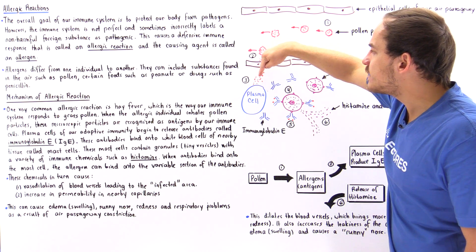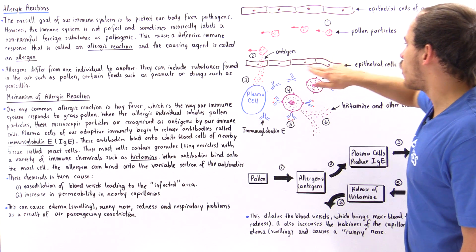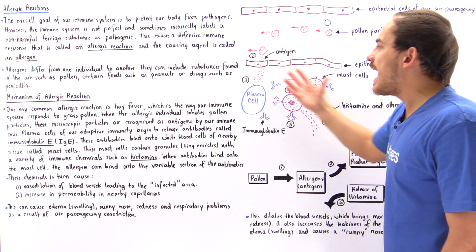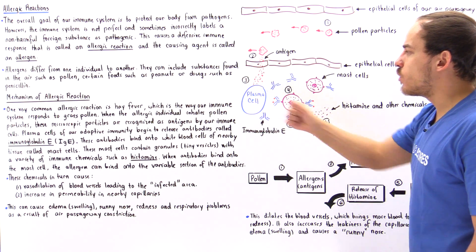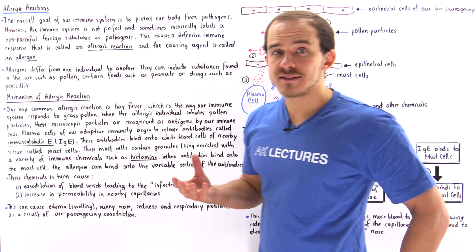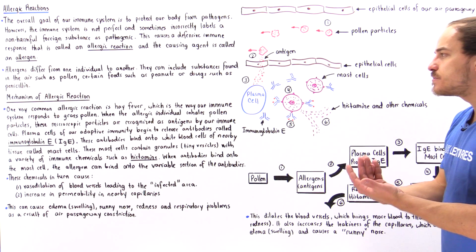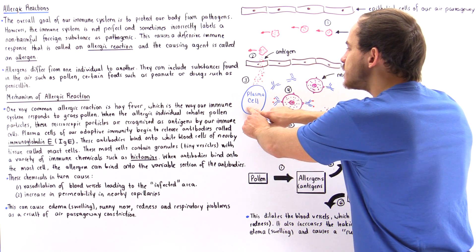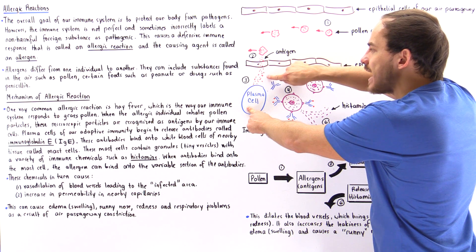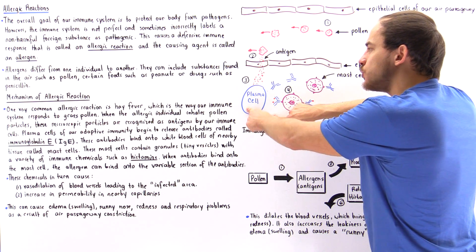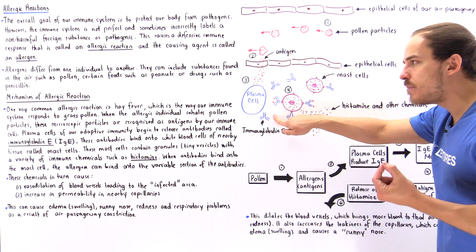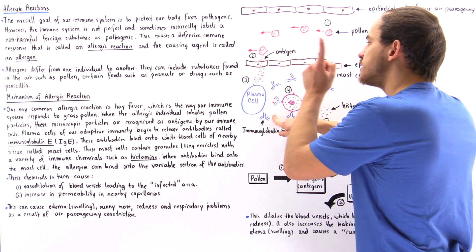These tiny antigens can diffuse across the epithelial cells and into the nearby tissue where we have different types of white blood cells. B lymphocytes produce plasma cells and these plasma cells can recognize these antigens and begin to produce the corresponding antibody that binds to this antigen.